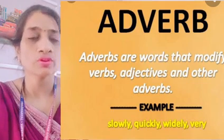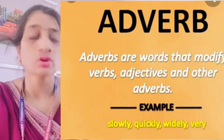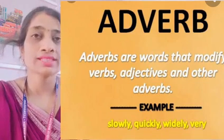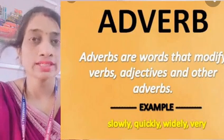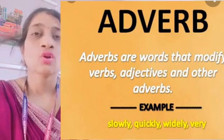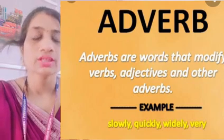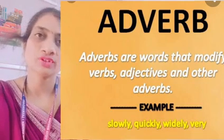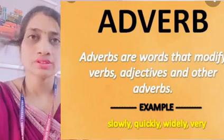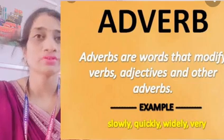Adverbs woh words hote hai jo verbs ko, adjectives ko aur kuch aur adverbs ko describe karte hai. Jaise kuch words like frequently, slowly, here, there, often, sometimes, rarely, regularly — yeh adverbs ki category mein aate hai. So adverbs are the words that describe the verbs, adjectives and some more adverbs.